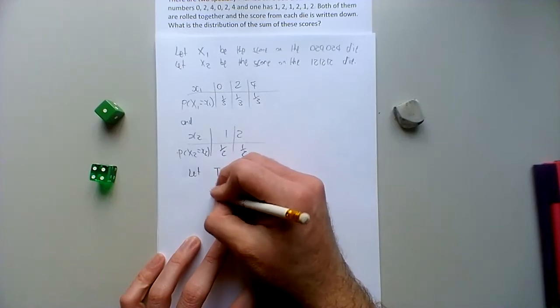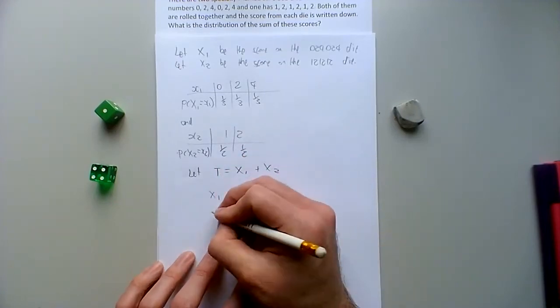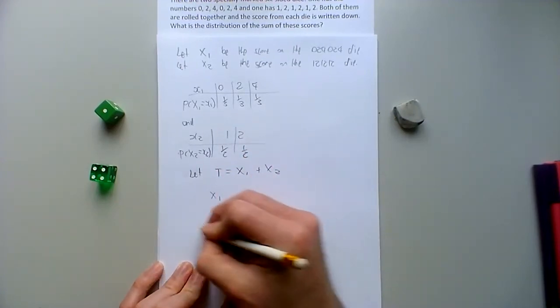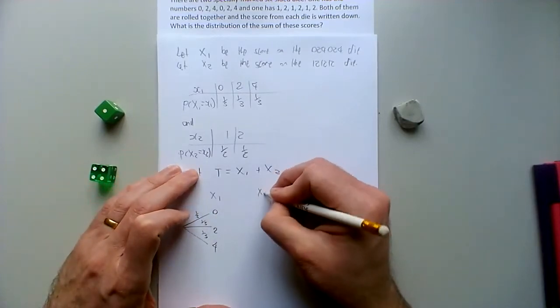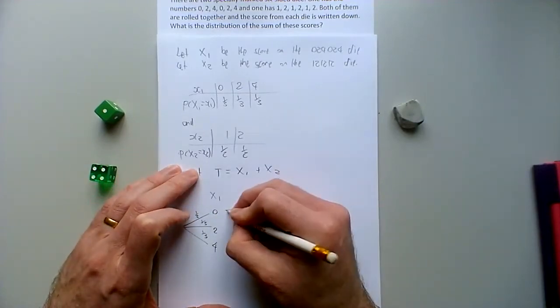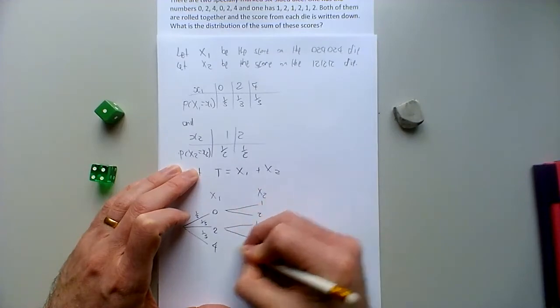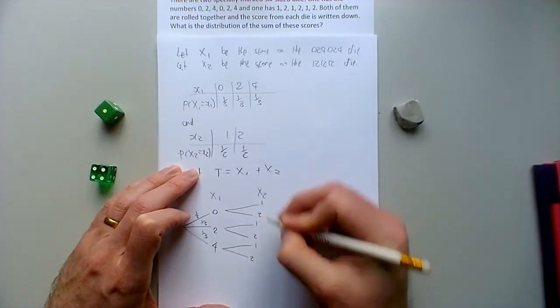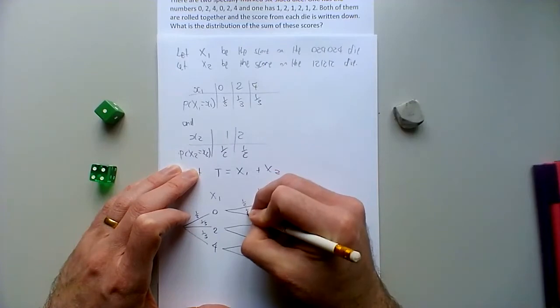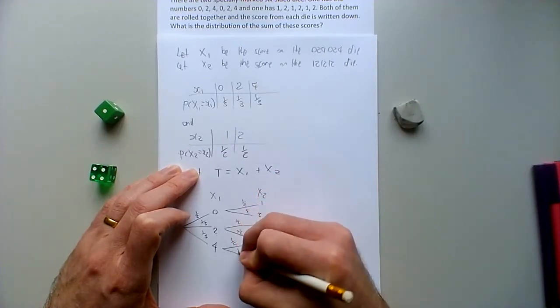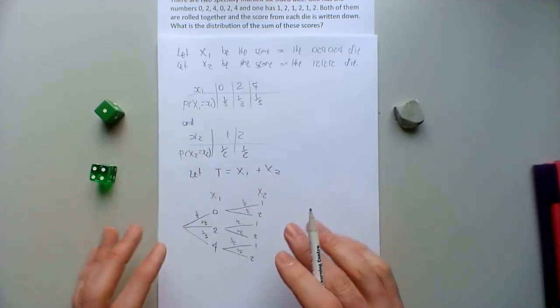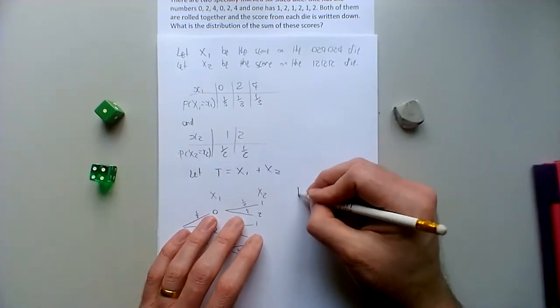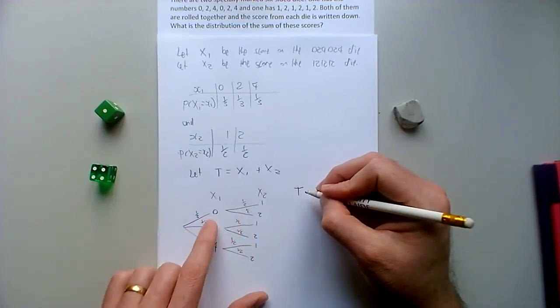So let's see, we've got the first die, so x1 is either 0, 2 or 4. And those each happen with probability a third. And then x2 is either 1 or 2 and there with the probability a half. And then, so that describes the sample space, and then the t would be the sum of these two.